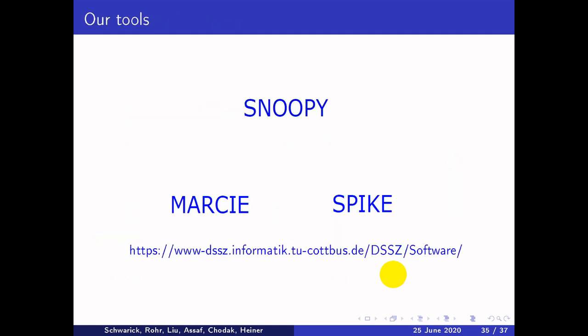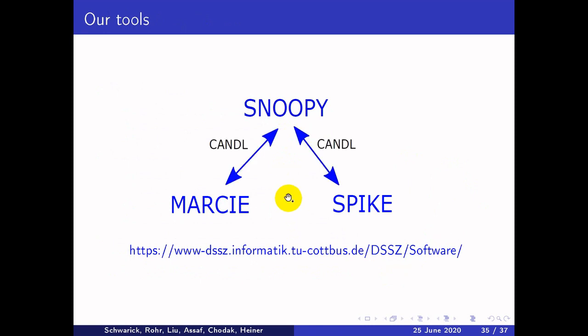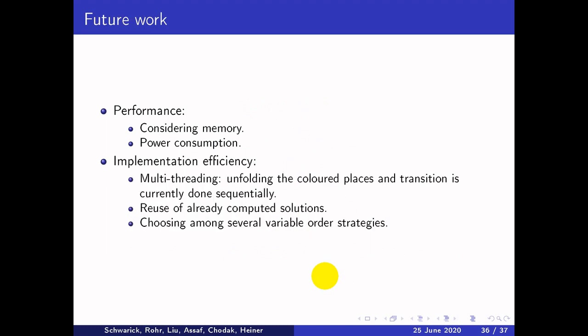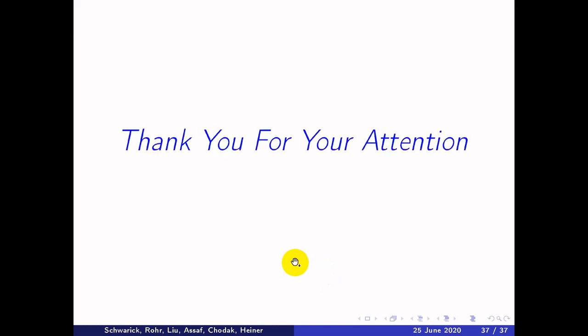Our tools are Snoopy, Marcy, and Spike. Marcy and Spike can communicate with Snoopy using the CANDL format, and all tools can read PNML format — available for download from our website. Future work includes performance criteria considering memory and power consumption, implementation efficiency using multi-threading since unfolding of colored places and transitions is currently done sequentially, reuse of already computed solutions, and choosing among several variable ordering strategies. Thank you for your attention.